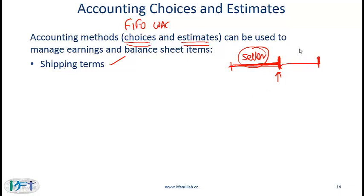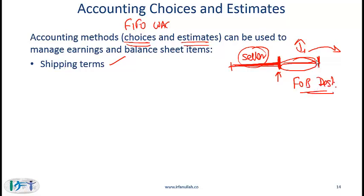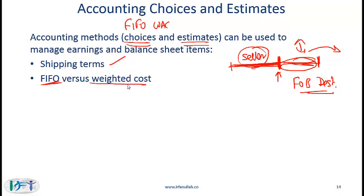Conversely, if in the next quarter earnings are really good and management wants to push some earnings to the following quarter, shipping terms could be defined as FOB destination, meaning the sale occurs when the product is received by the customer — when it reaches the customer's docks. So with something as simple as shipping terms, earnings can be managed quite easily. A classic accounting choice is FIFO versus weighted average cost as applied to inventory. Under IFRS, both FIFO and weighted average cost are allowed; US GAAP companies also have the option of using LIFO.